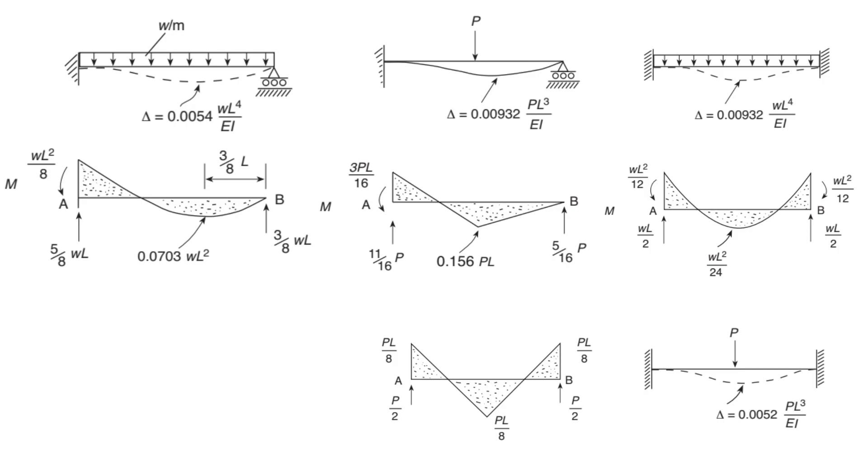To understand the analysis of an indeterminate structure and the impact of settlement, let's focus on a specific example, the propped cantilever structure shown. It has only one redundancy, making it relatively simpler to analyze. By employing simple equilibrium equations, we can determine the end-support reaction.